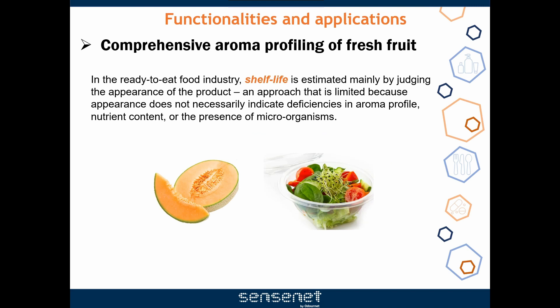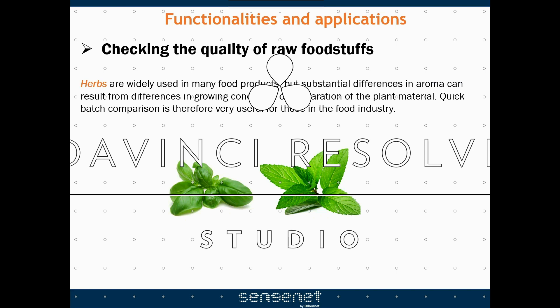In the ready-to-eat food industry, shelf life is estimated mainly by judging the appearance of the product — an approach that is limited because appearance does not necessarily indicate deficiencies in aroma profile, nutrient content or the presence of microorganisms. The evolution of VOCs during shelf life is important to detect over-ripening or changes in odor. Checking the quality of raw food stuffs such as herbs is also important: herbs are widely used in many food products, but substantial differences in aroma can result from differences in growing conditions or preparation of the plant material. Batch comparison is therefore very useful for those in the food industry.